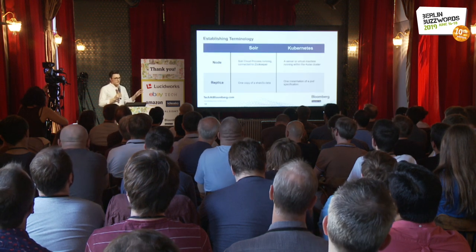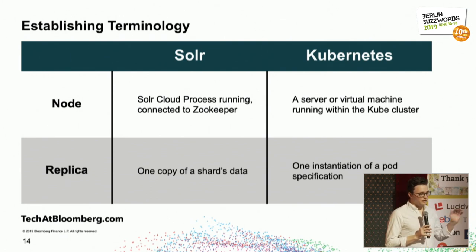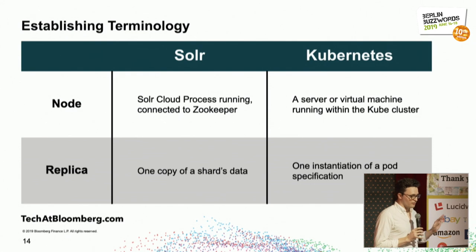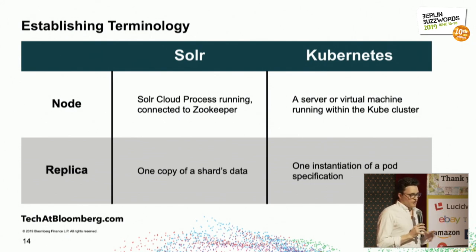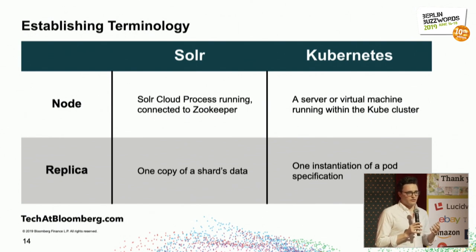Just establishing some terminology — this technology, we like to overload terms. There are two terms used in both Kubernetes and Solr. 'Node' is used in both. In Solr, it means a Solr cloud process that is running and connected to Zookeeper. But in Kubernetes, it means something very different — it just means a server or virtual machine running within a Kubernetes network.